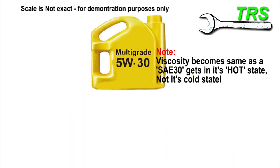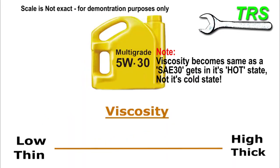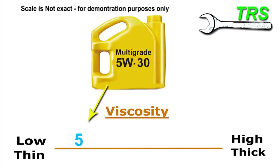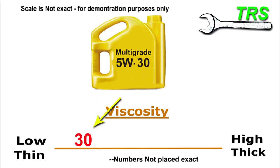And then as the engine gets hot, this 5 viscosity transforms into a 30 viscosity. So in a nutshell, the 5W-30 multi-grade oil takes on the viscosity of a cold 5 when the engine's cold, and a hot 30 when the engine's hot. Those two main viscosities are the functionality of the multi-grade oil.